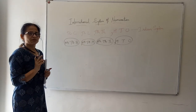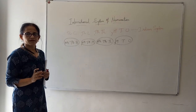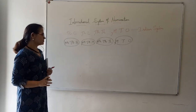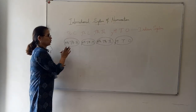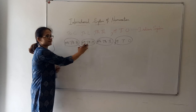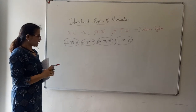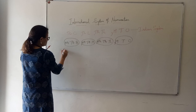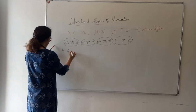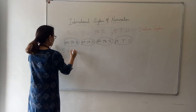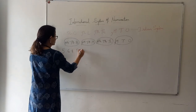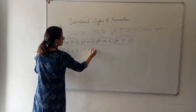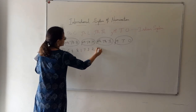Whenever we read any number in the international system of numeration, we write the family name at the end. I would give an example for this. The number is 5, 6, 4, 8, 1, 7, 3, 2, 9.